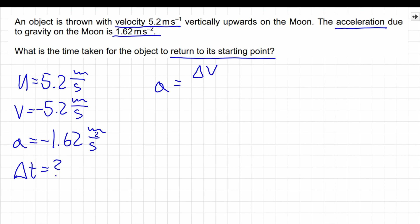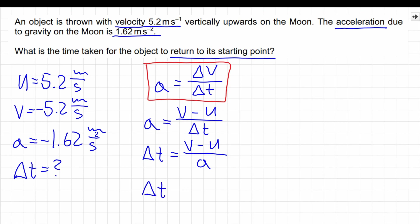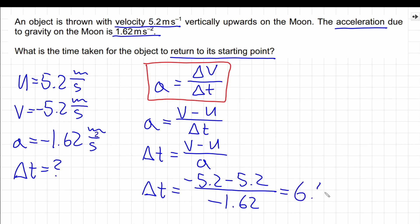Since the object is moving with uniformly accelerated motion, we can use the definition of acceleration: a equals delta v divided by delta t, which gives a equals v minus u divided by delta t. We rearrange this equation to make delta t the subject. We then replace the symbols with numerical values. The final velocity was negative, so we have minus 5.2 minus the initial velocity of positive 5.2, divided by the acceleration, which is also negative because it acts in the opposite direction to the initial velocity. Our calculation gives us 6.4 seconds.